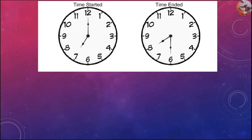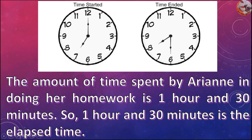By looking at this picture, Arian started her homework at 7pm, then it ended at 8:30pm. The amount of time spent by Arian in doing her homework is 1 hour and 30 minutes. So, 1 hour and 30 minutes is the elapsed time.